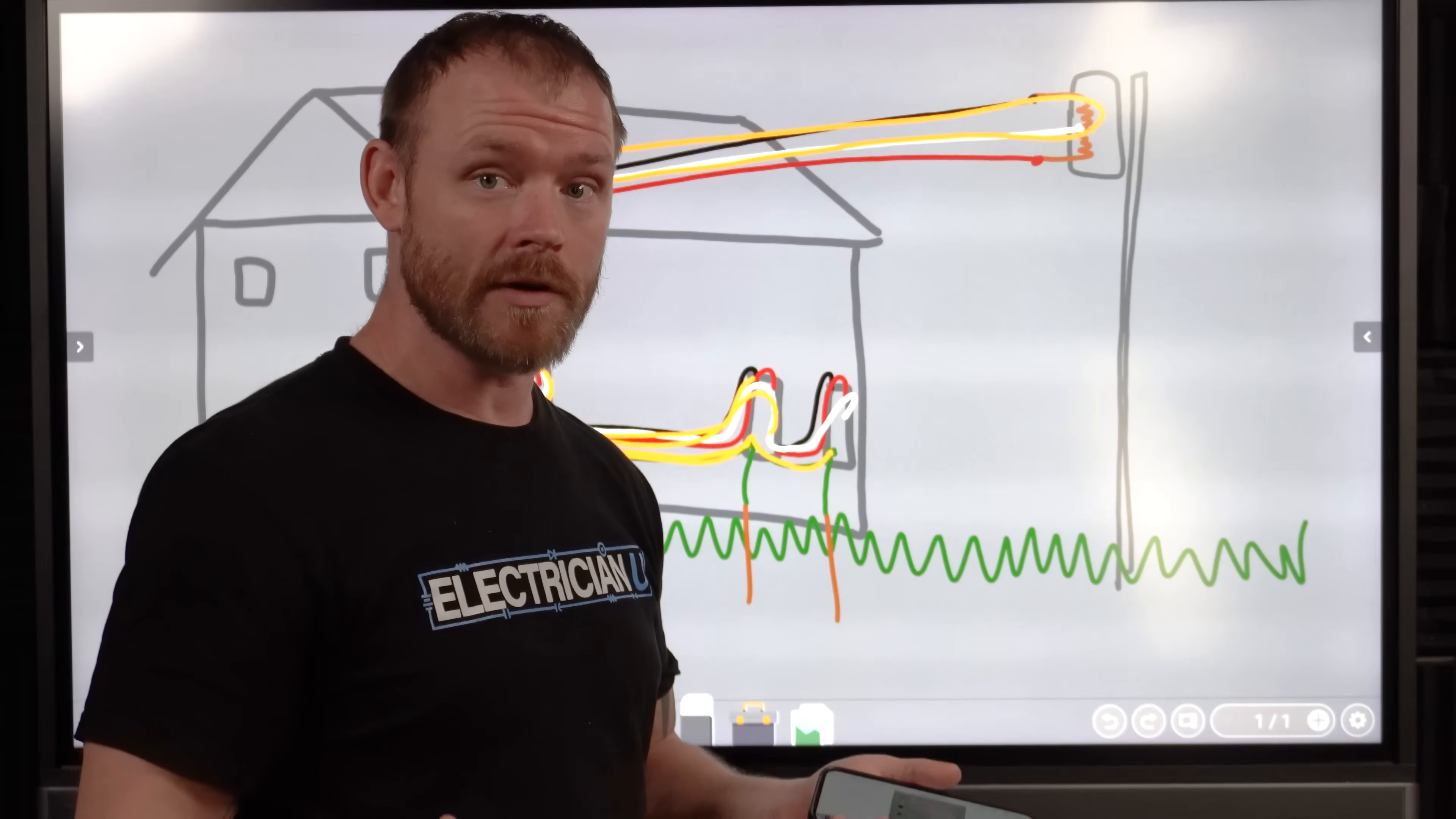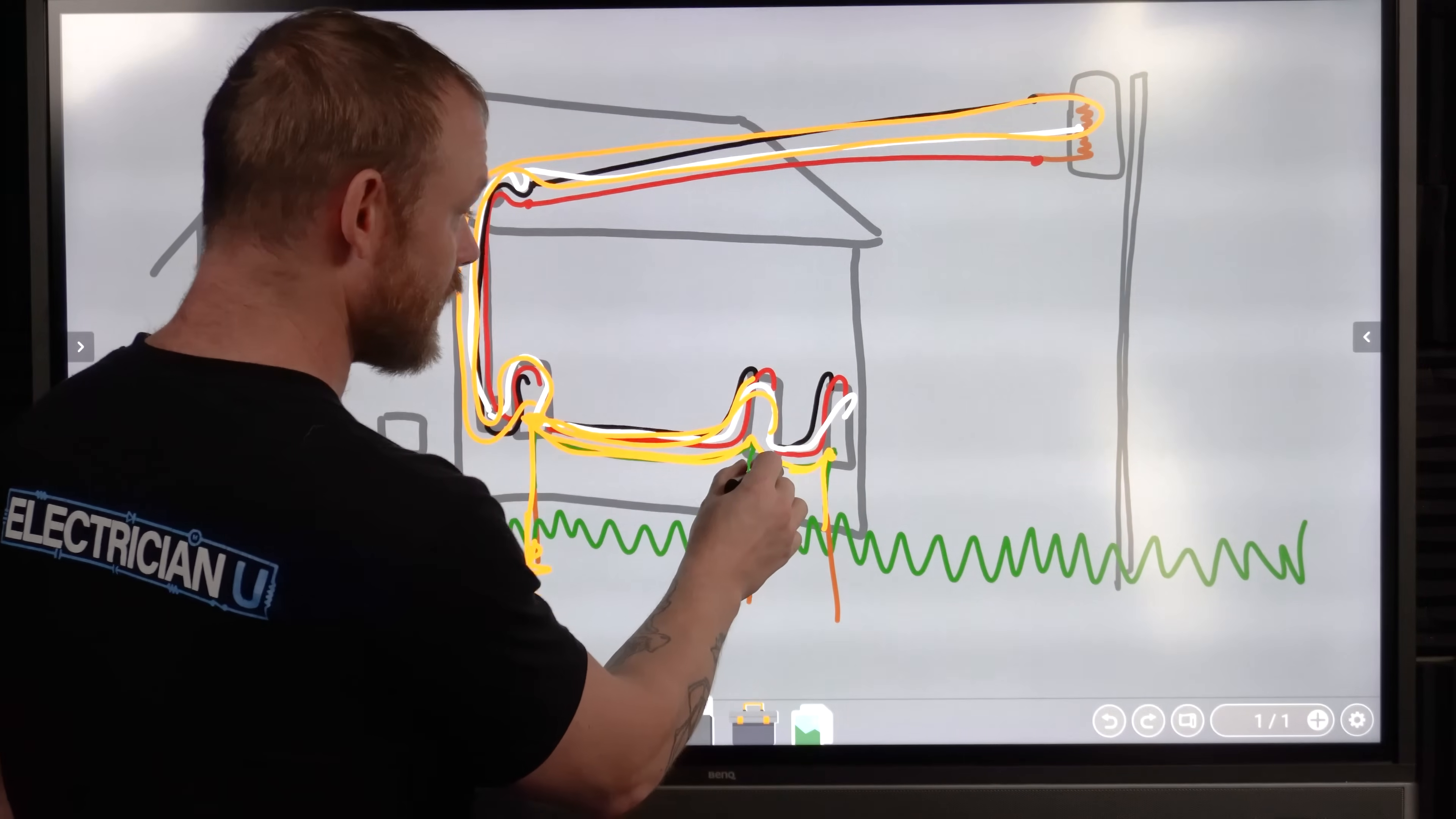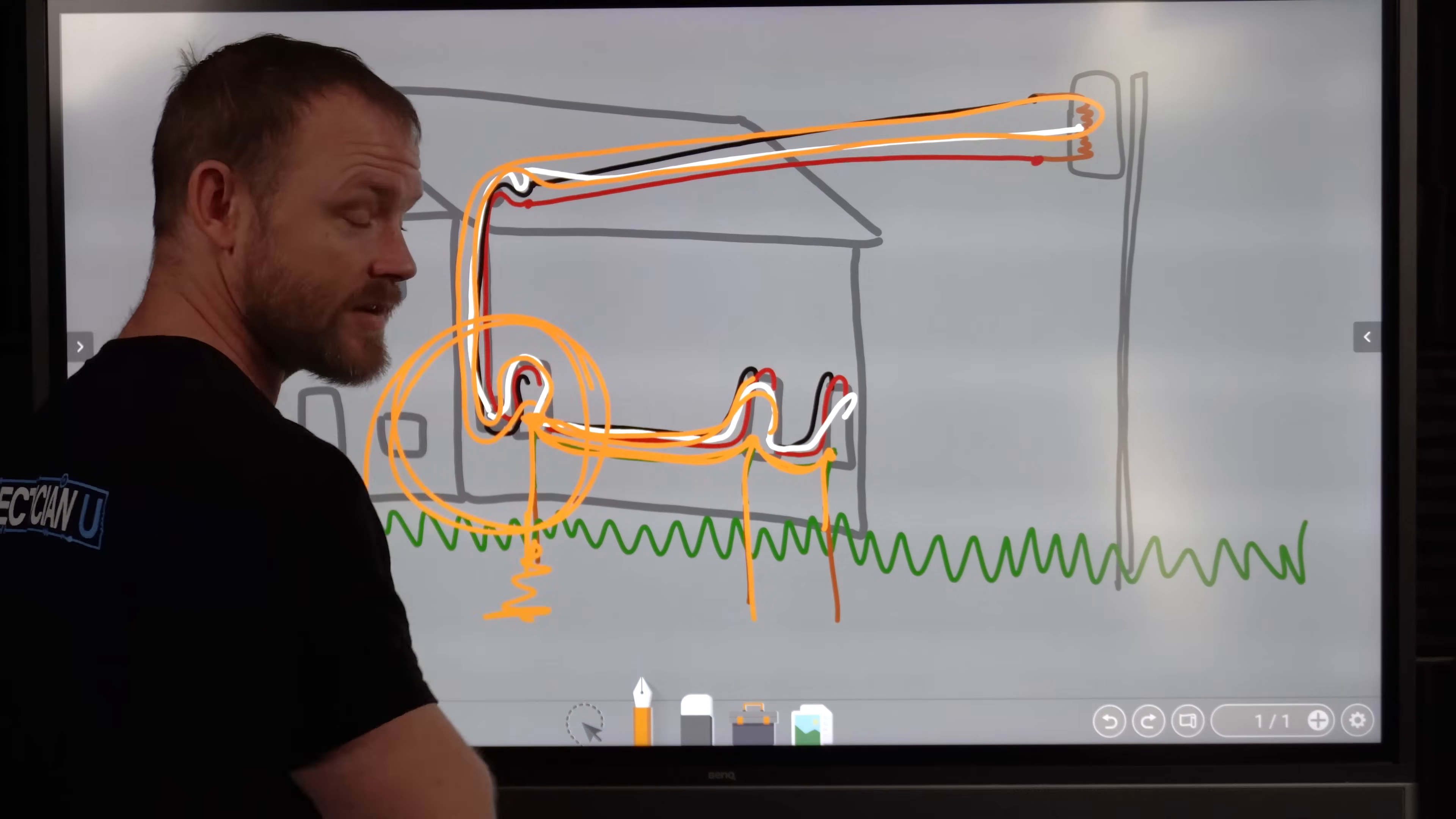So just make sure if you're going to have supplementary ground rods, which is allowed by code, however many of them you want, just don't connect them to neutral at any of the sub-panels. Just make sure each ground rod goes to the ground bus, has an equipment grounding conductor that goes to the next panel. You got an equipment grounding electrode conductor that goes down to the ground bar for the next one, that it's connected to the equipment grounding conductor. And the only place that you make a bond to neutral is still at the service.